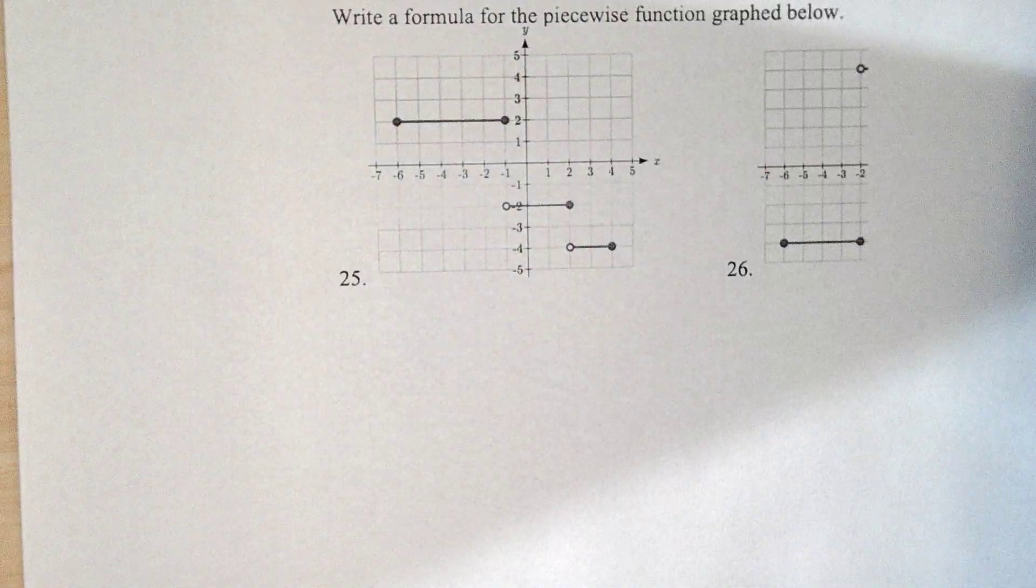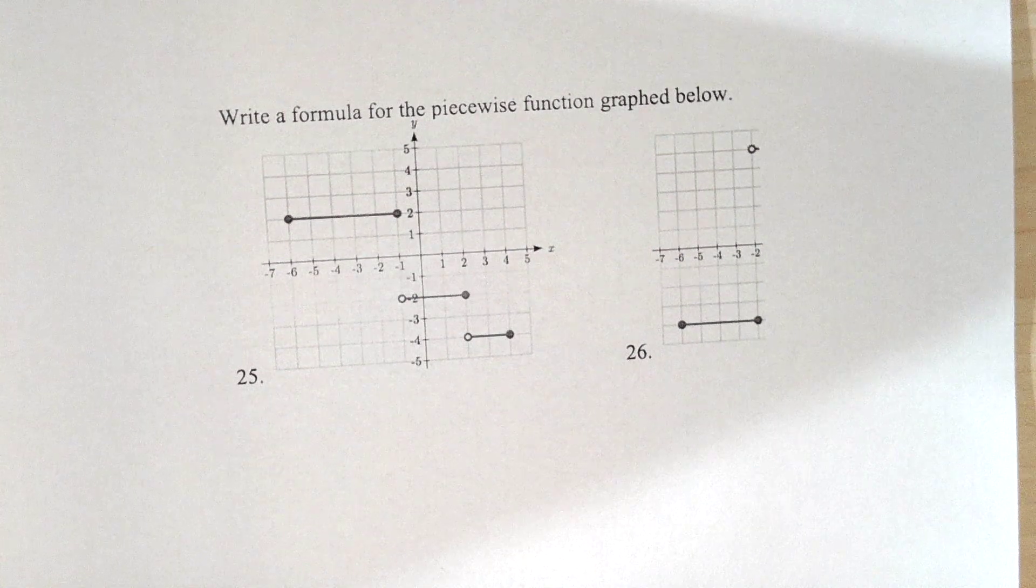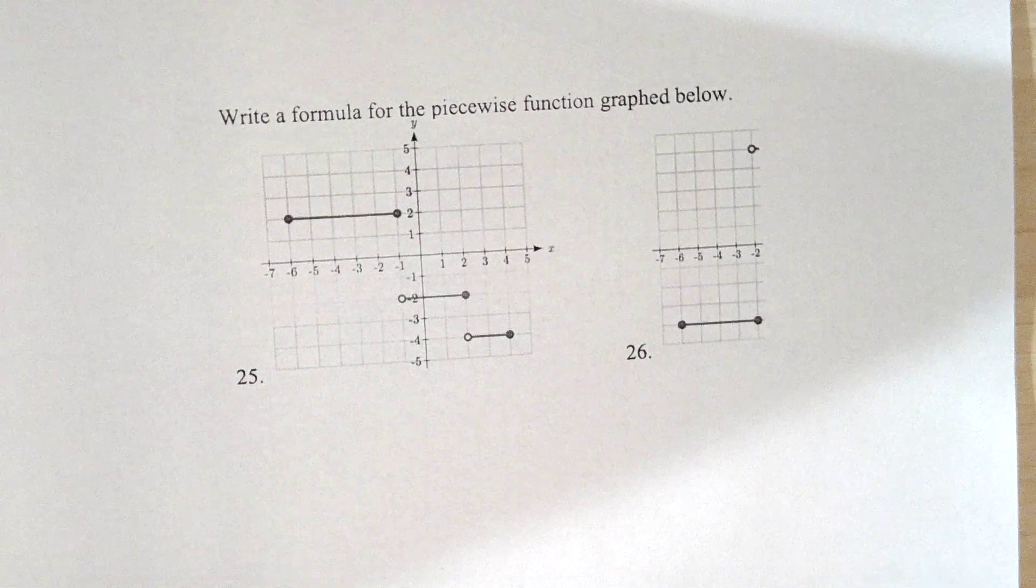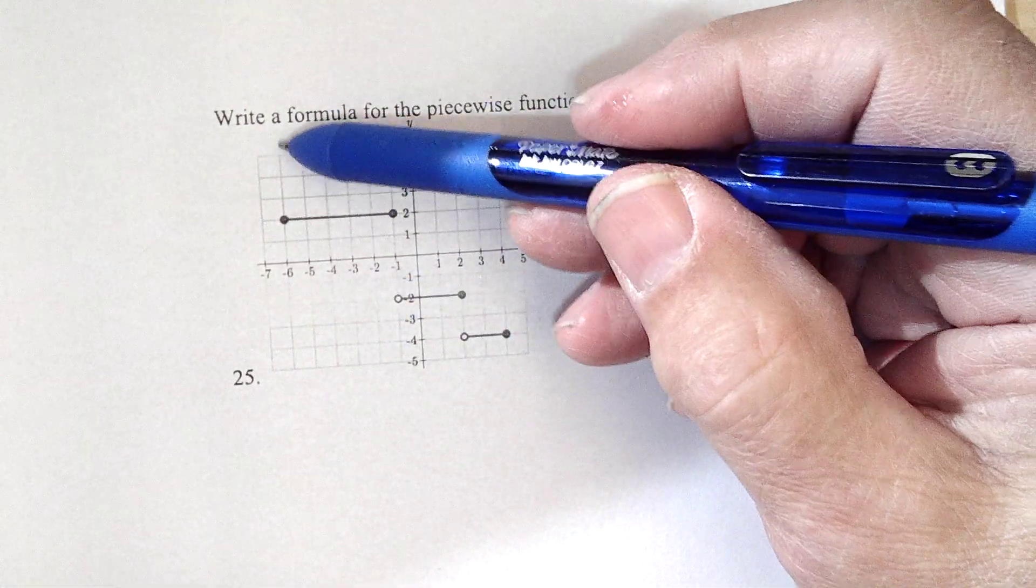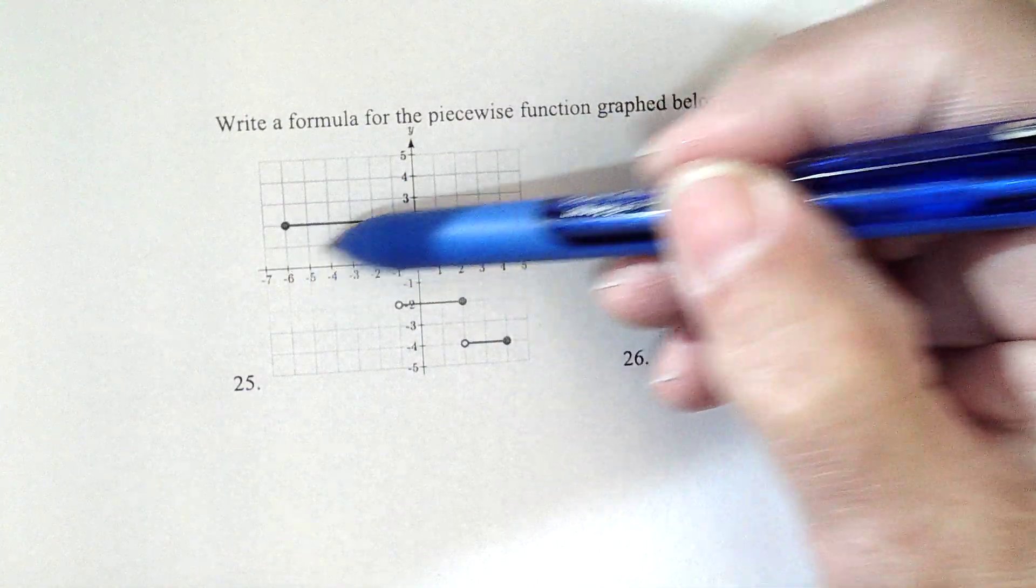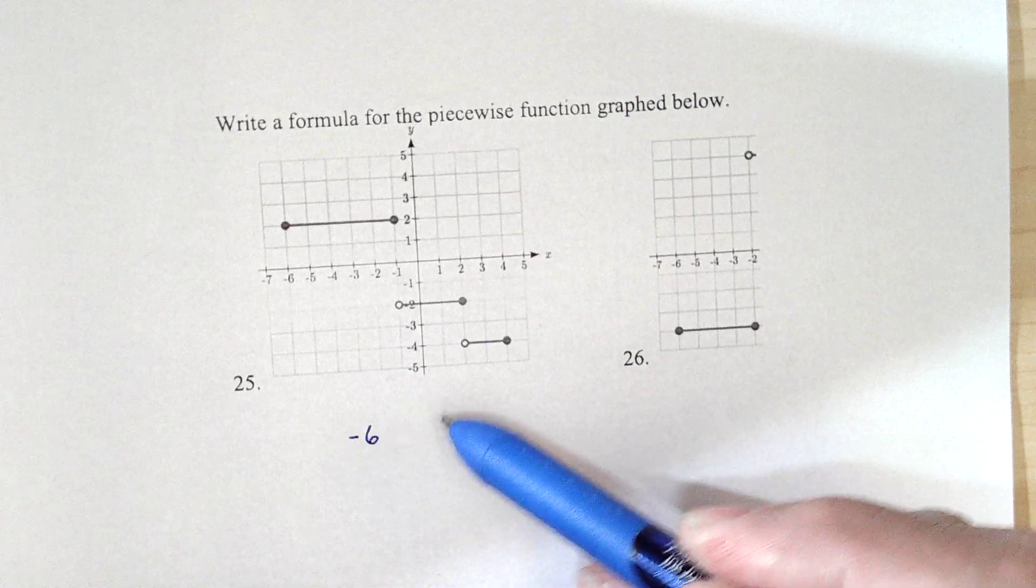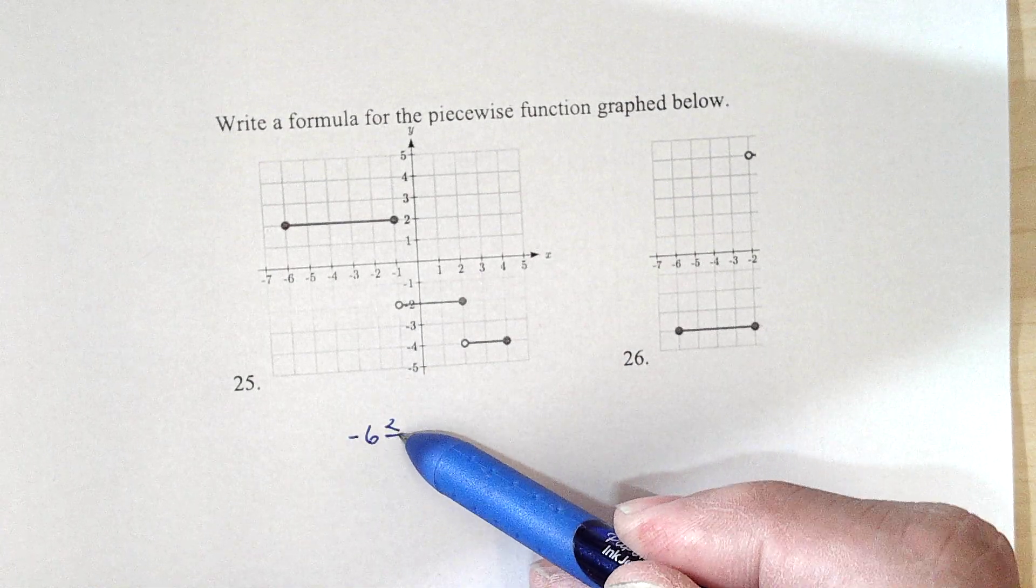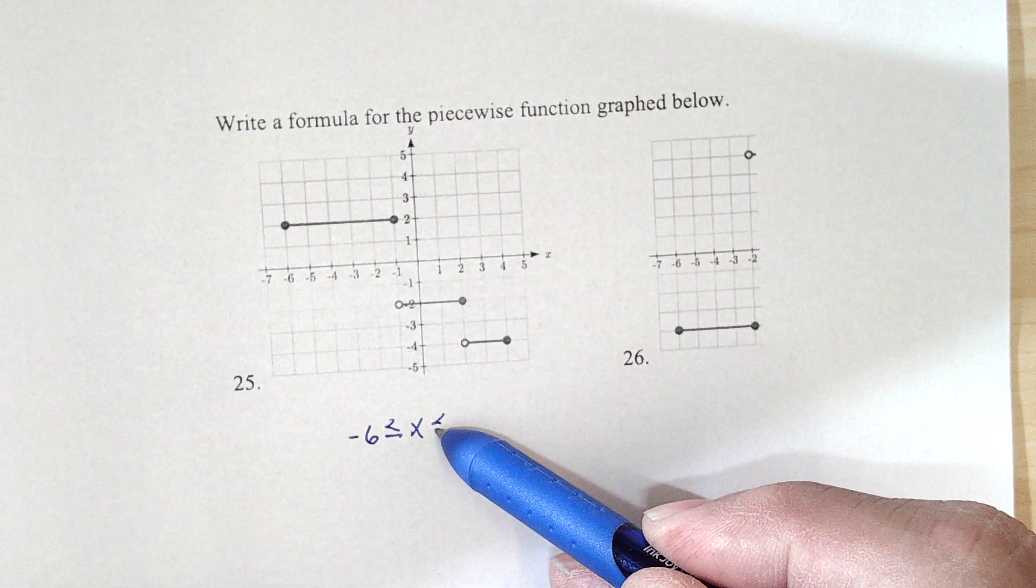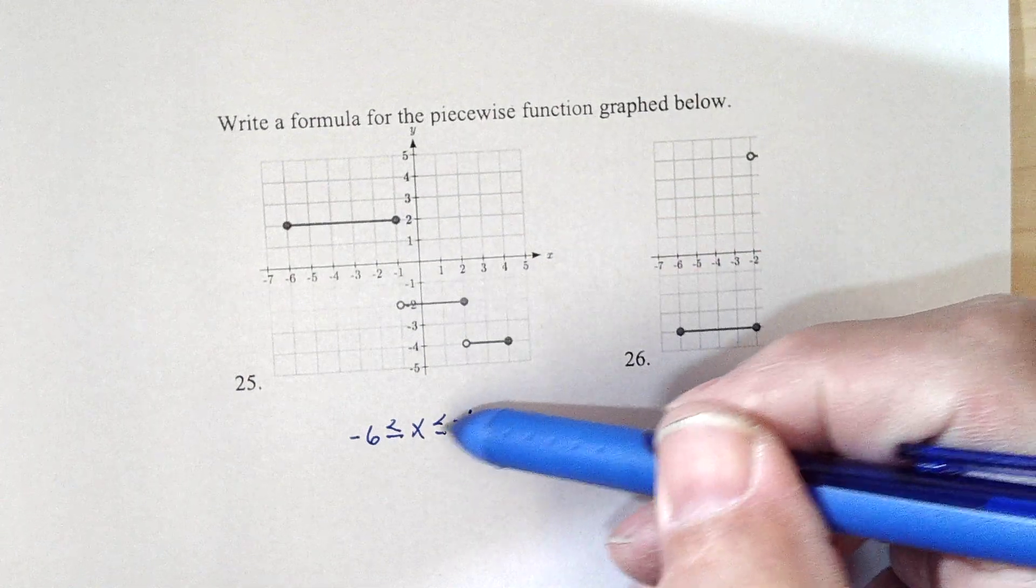One more problem that people had trouble with. I'm supposed to write a formula for this piecewise in number 25. So the first window, if I'm working from left to right, the first window is from minus 6 to minus 1. Minus 6 less than or equal, because the solid dot, is less than the x's, and the x's are less than or equal to negative 1, solid dot, so equal there.